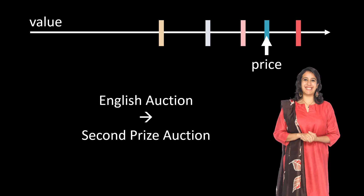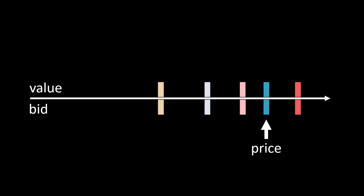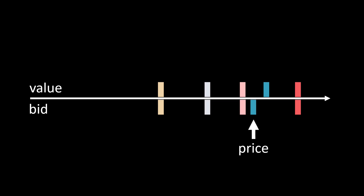Let's be a bit more formal for a moment, and show that the second price auction incentivizes all players to reveal their true valuation. Here we have our five players, and let's assume that their bid is equal to their value. Can a player gain something by not revealing their true value? Let's first look at Mr. Blue. If Mr. Blue lowers his bid, nothing will change for him, because Miss Red is still winning the auction.